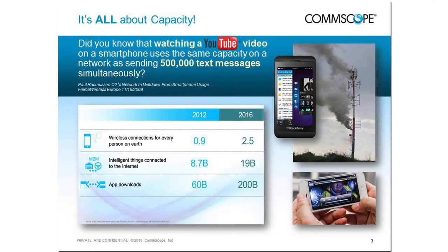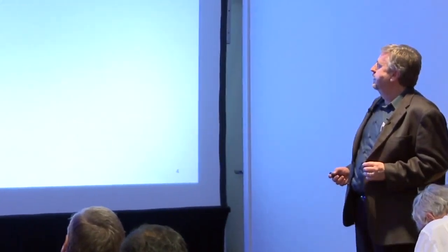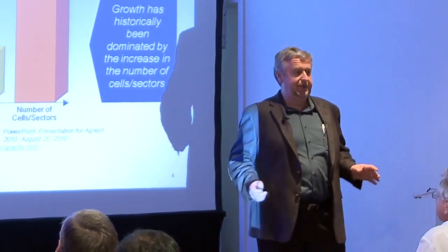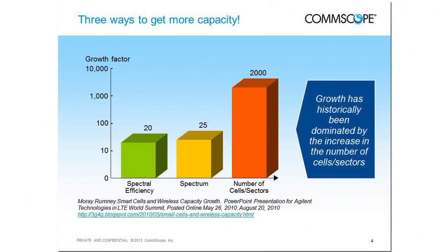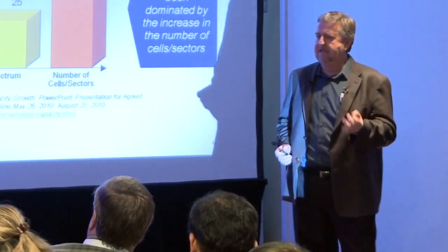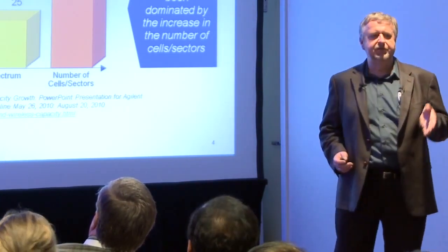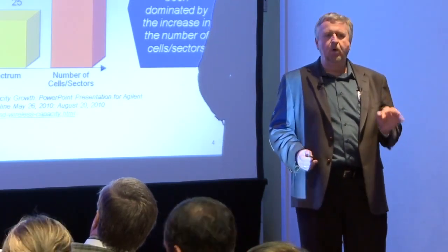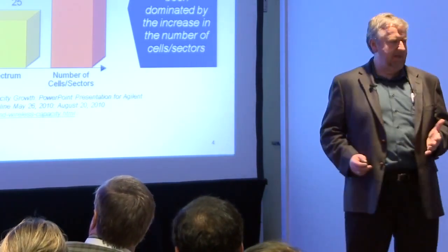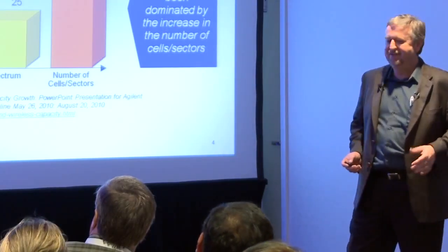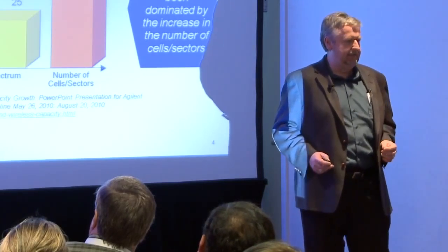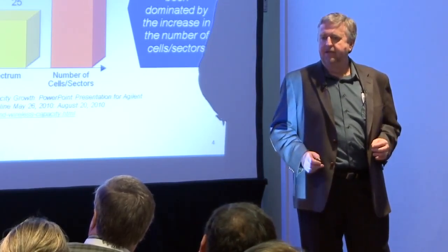I think everybody in this room by now knows that the issue is really all about capacity — how do we bring more capacity to subscribers, how do MSOs build up their networks to fulfill the demand? But fundamentally, no matter how you slice the pie, there are only three ways to really add capacity. One way is to use the spectrum you have more efficiently — the essence of transitioning from GSM to CDMA to OFDM modulation. The second way is to add more spectrum. The third way, and traditionally the way that's brought the most capacity to any network, is adding more cells.